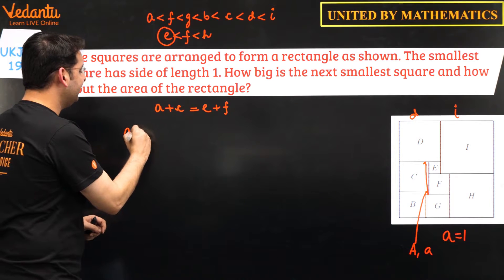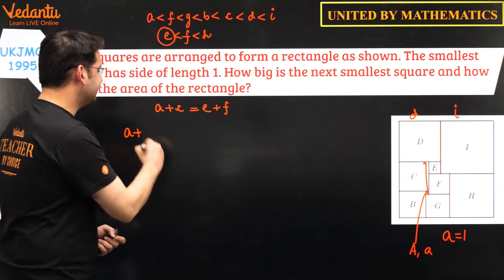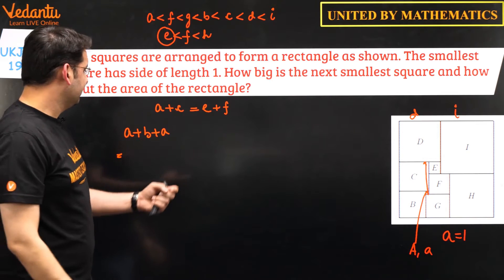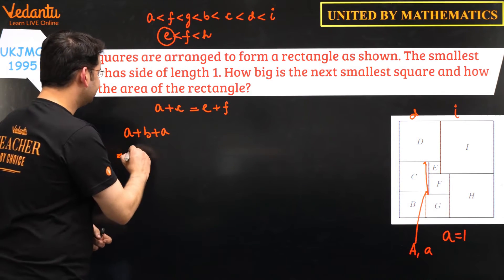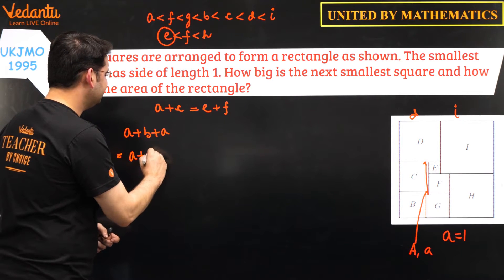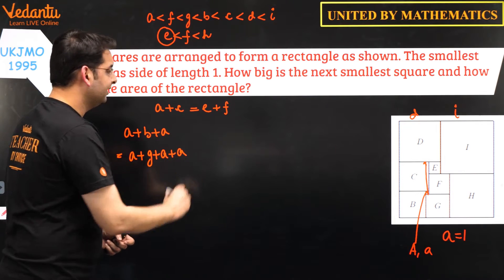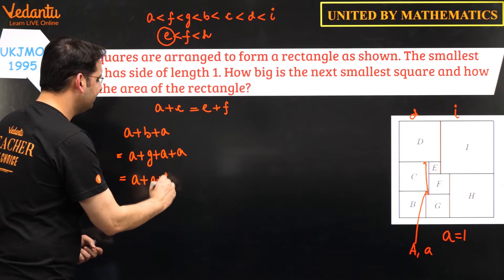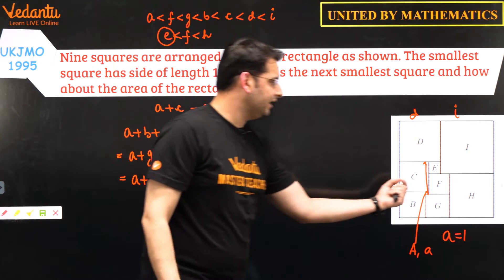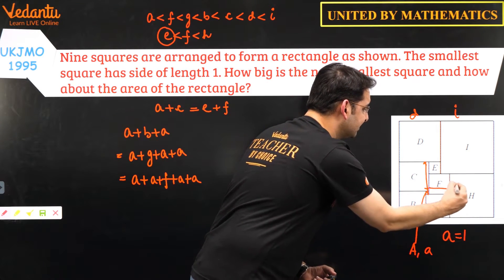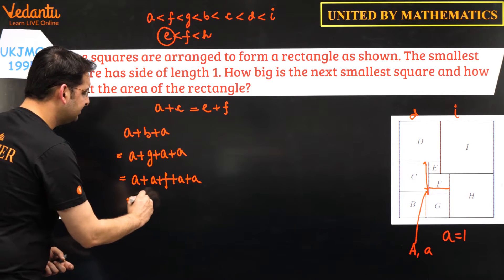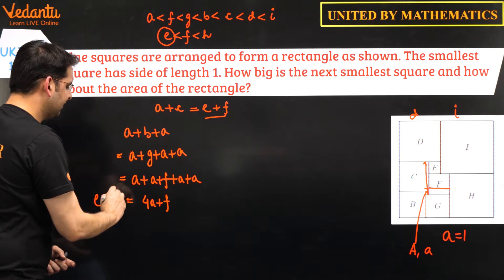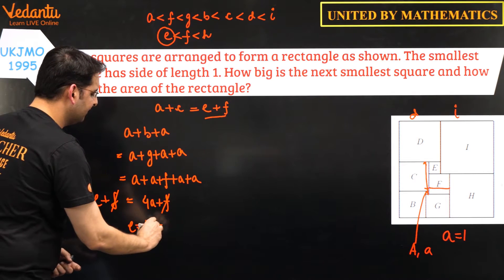From the figure, a + c = e + f. Now c = b + a, and b = g + a, and g = a + f. Substituting: a + c = a + (b + a) = a + (g + a + a) = a + (a + f + a + a) = 4a + f. So we have 4a + f = e + f. Eliminating f gives e = 4a.